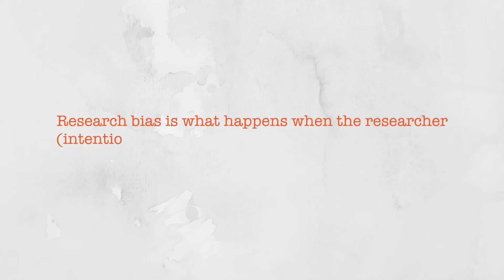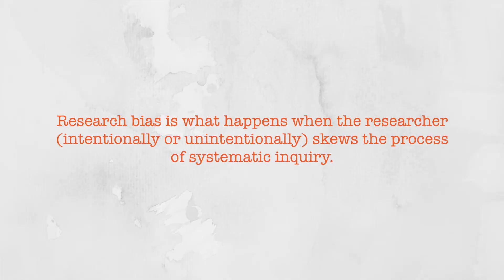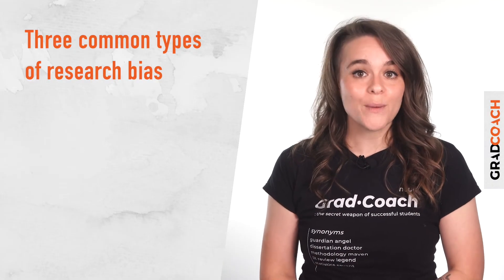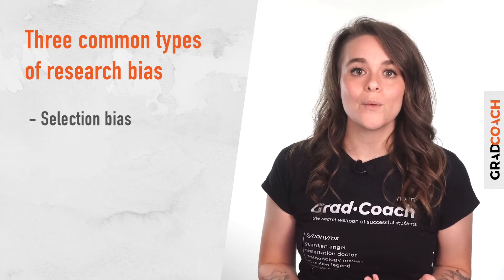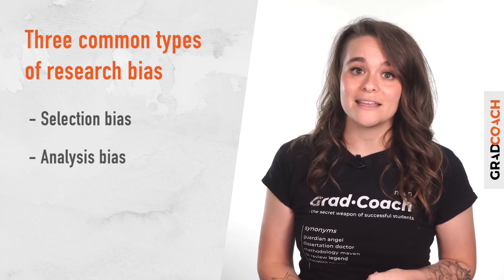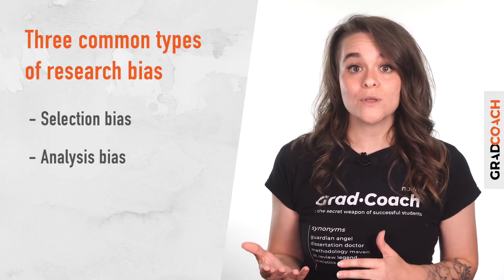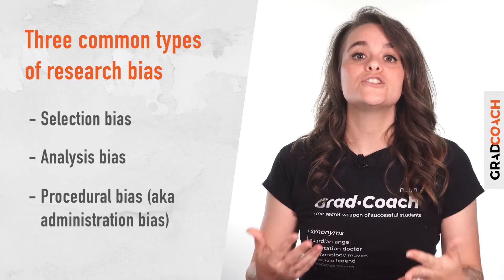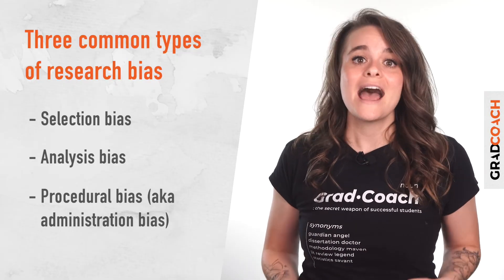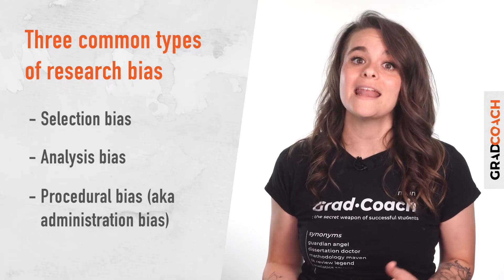Let us do a quick recap. Research bias refers to any instance where the researcher or research design negatively influences the quality of a study's results, whether intentionally or not. The three common types we looked at are: selection bias — where a skewed sample leads to skewed results; analysis bias — where the analysis method or approach leads to biased results; and procedural bias — where the administration of the study, especially data collection, impacts who respondents are and how they respond. There are many other forms of research bias, so be sure to familiarize yourself with as many potential sources as possible to minimize the risk in your study.